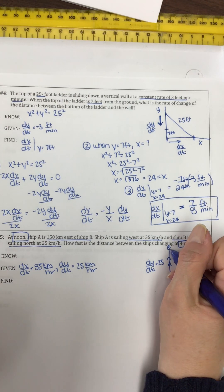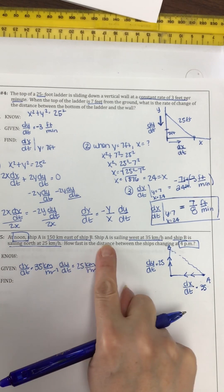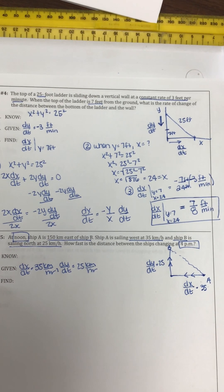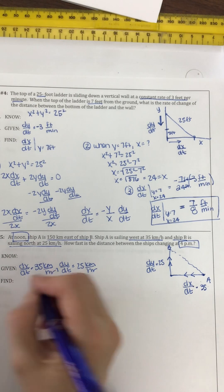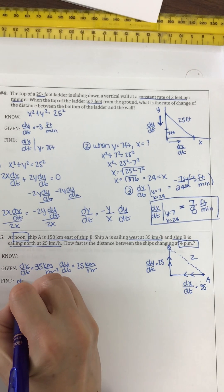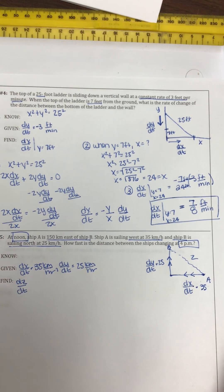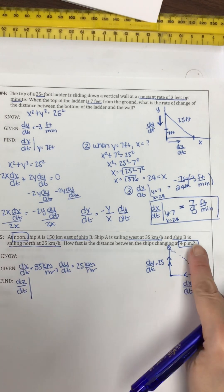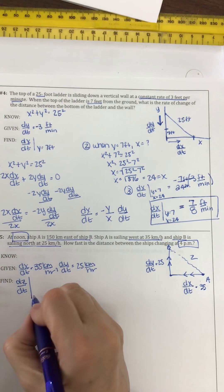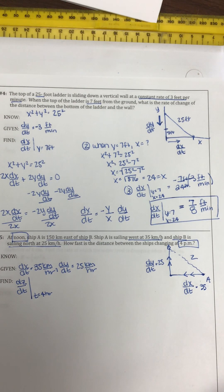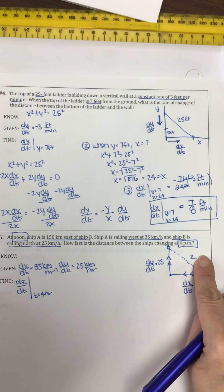We're wanting to know the rate at which the distance between them is changing — call it dZ/dt — specifically when time is 4 hours. We've got to find a formula. Thinking about a right triangle, x squared plus y squared equals Z squared. But I don't know x or y independently — I need to express the horizontal distance in terms of the problem setup.